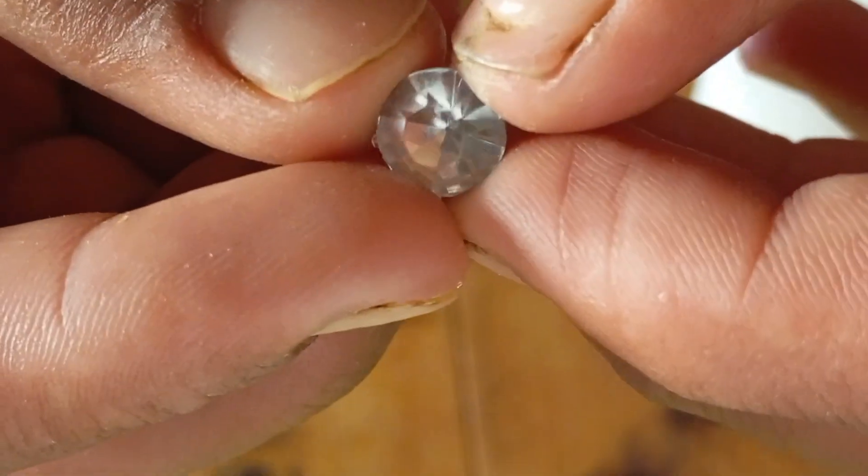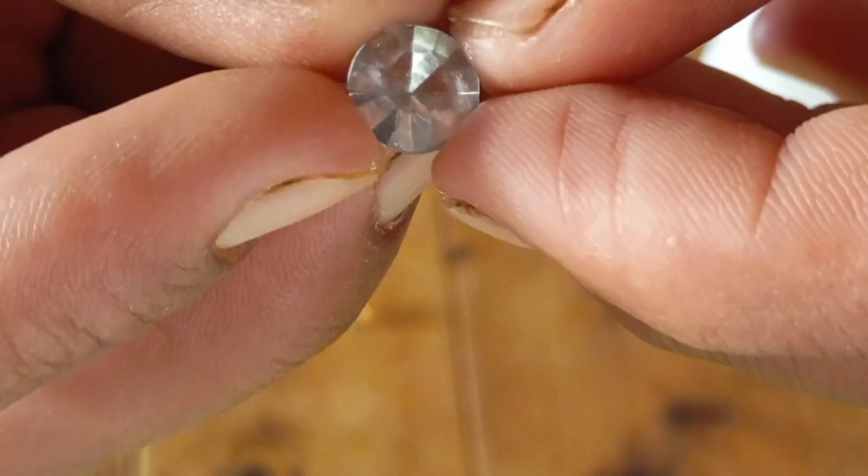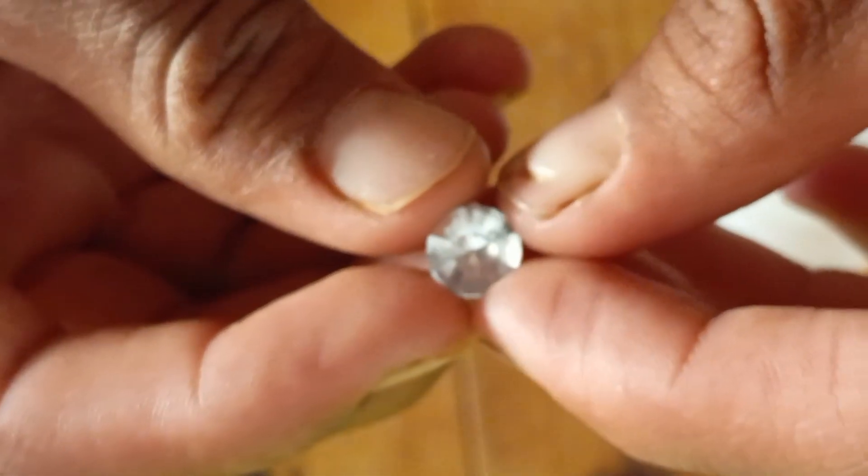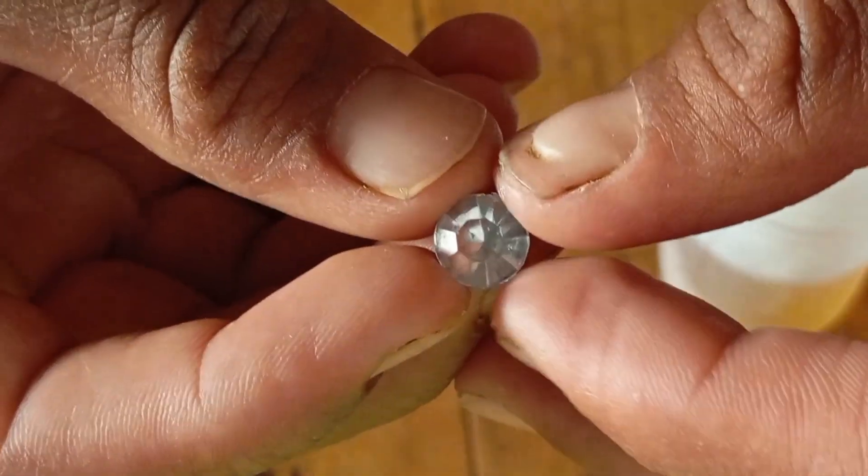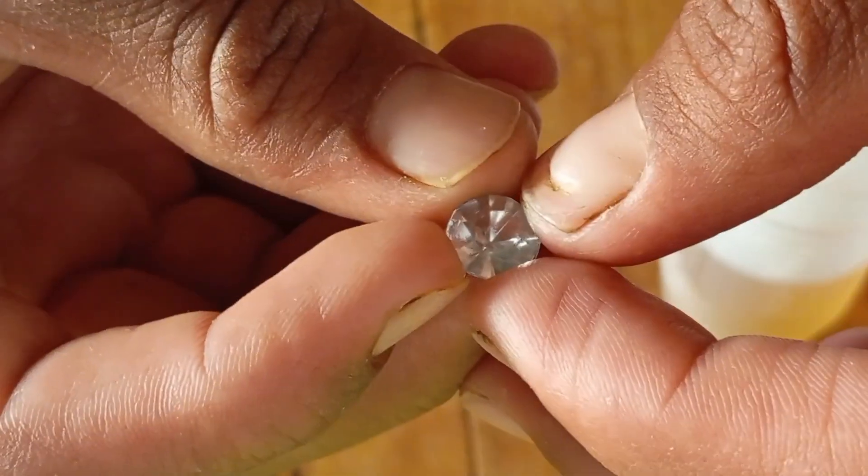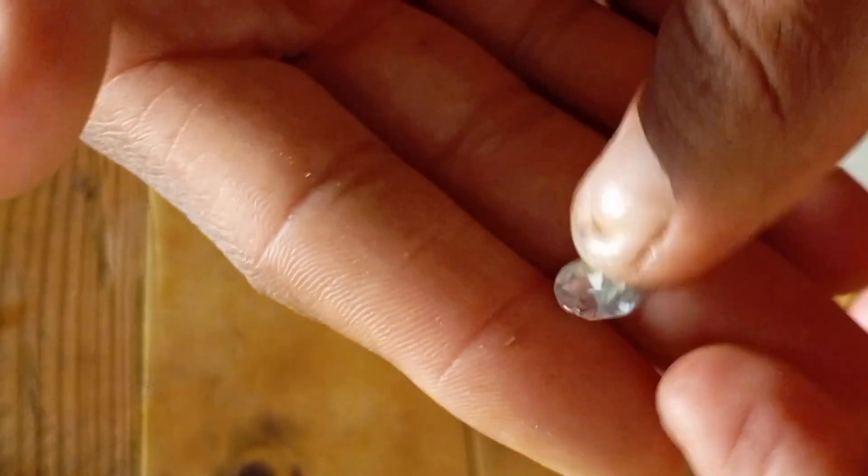The fog test. Hold your stone close to your mouth and breathe on it like you're fogging a mirror. If the fog disappears instantly, it's a real diamond. If it stays for a few seconds, sorry, that's a fake one.